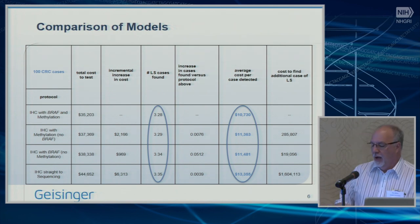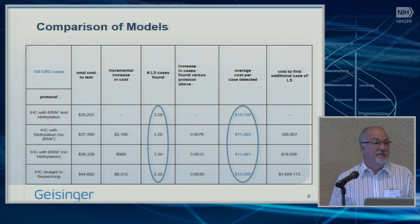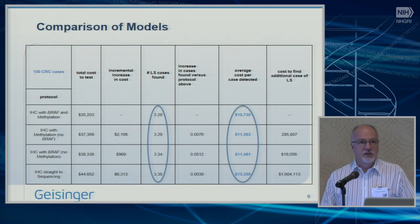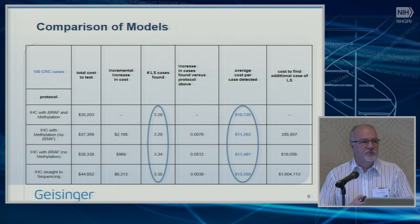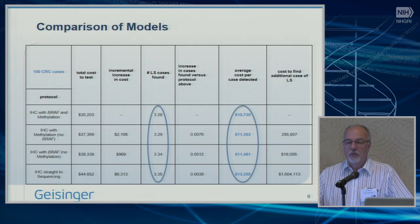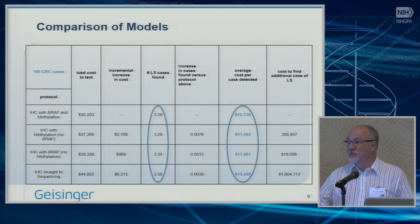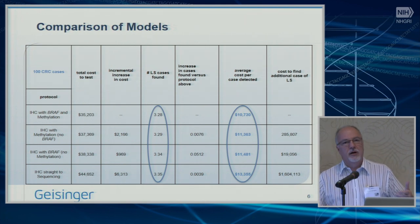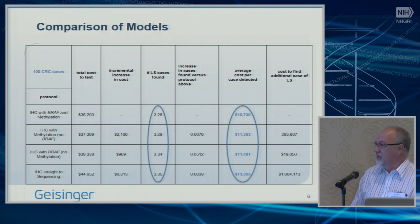As we were implementing this across seven different hospitals doing colorectal cancer resection, one hospital said we should only screen patients under age 50. Rather than having an eminence-based medicine discussion, we went back to our model and modeled out different ages. What we found was it's cheaper with an under-50 cutoff, but you miss half the cases. The system looked at the total expenditure and said we could find the money — we're screening everybody. The data was extremely useful to move this forward consistently across the system.